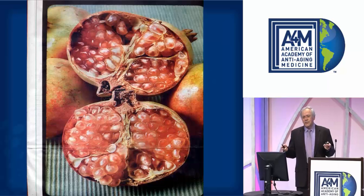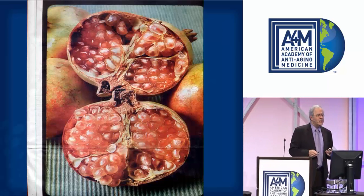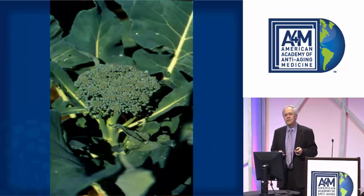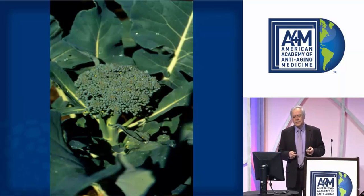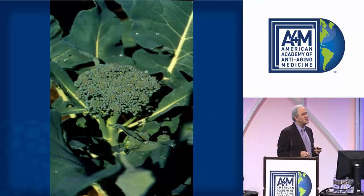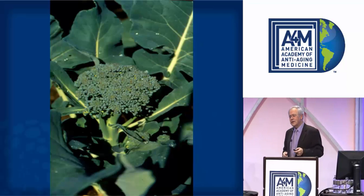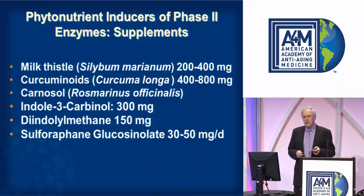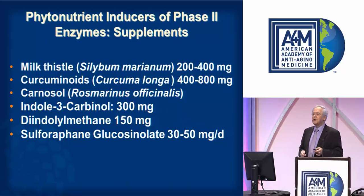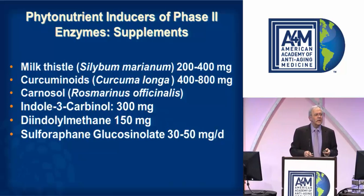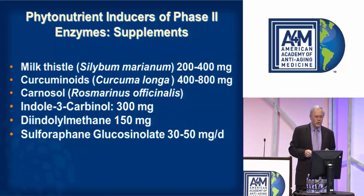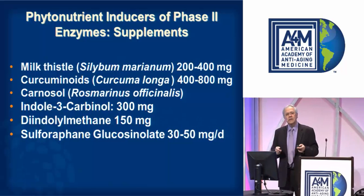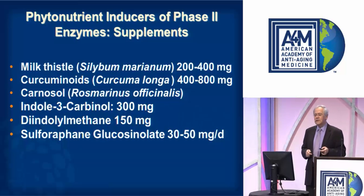Pomegranate is a great source of ellagic acid. Broccoli from the cruciferous family is one of my favorites — I have steamed broccoli every day at supper time and put a lot of kale in my shake. There's also milk thistle, curcumin from the spice turmeric, carnosol, and from the cruciferous vegetables: indole-3-carbinol, diindolylmethane, and the sulforaphanes.